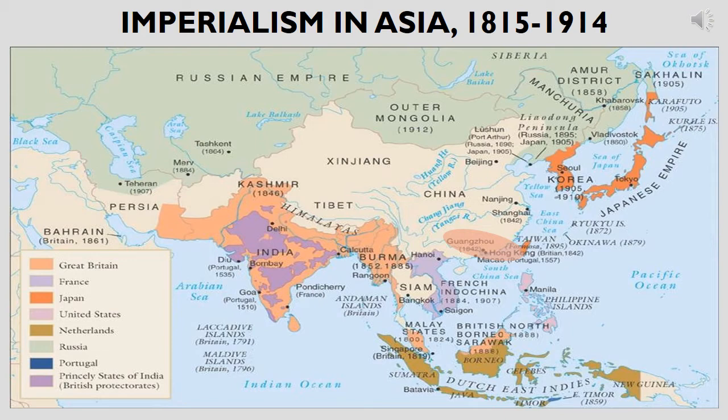Note the key to the bottom left of this slide, so you can see the array of European states that came to dominate the politics, economics, and in some ways the culture of some of Asia's oldest civilizations. First, indicated in a sort of salmon color, you can see the British Empire's continued expansion in India and South Asia. The British also forcibly opened up China during the Opium Wars between 1839 and 1842, bringing major port cities, including the island city of Hong Kong, as spheres of influence under British imperial control.